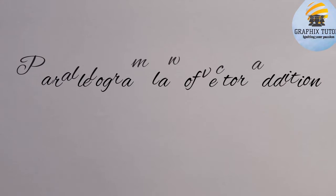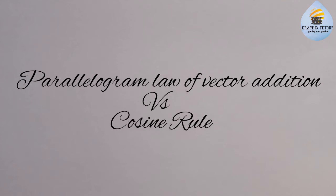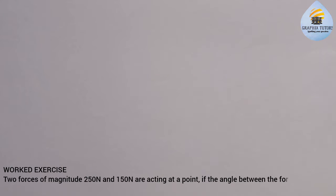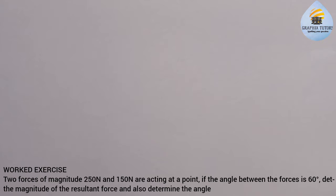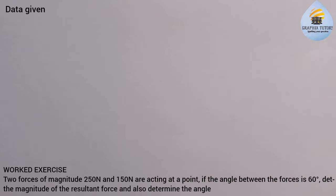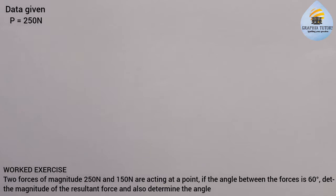Hello everyone, my name is Graphics. In this video we want to solve a problem. The question goes like this: two forces of magnitude 250 Newton and 150 Newton are acting at a point. If the angle between the forces is 60 degrees, determine the magnitude of the resultant force and also determine the angle. Let us write out the parameters: we have P = 250 Newton, Q = 150 Newton, and theta = 60 degrees.